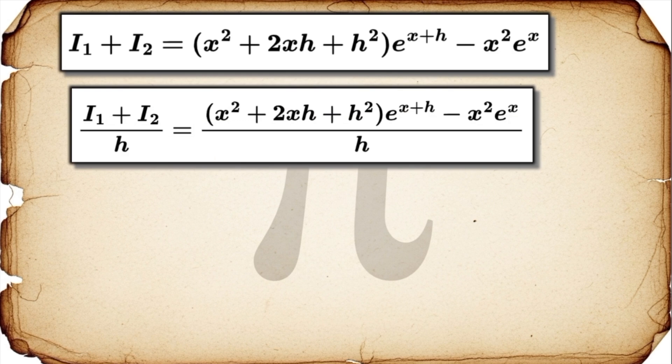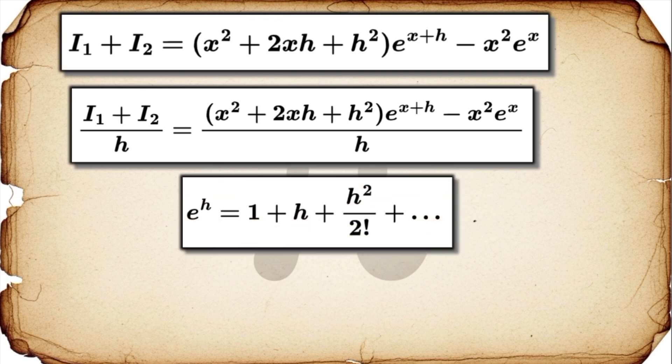So now we have to take the limit of our combined expression, all divided by h. And the problem is, we have that pesky h in the denominator. So how do we handle this? Well, we use a really beautiful and powerful trick, the Taylor series expansion. We can replace e to the h with its infinite polynomial series, which starts with 1 plus h plus h squared over 2 factorial, and so on. This turns the tricky exponential term into something we can do algebra with.